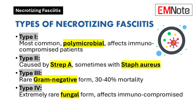Clinicians commonly classify necrotizing fasciitis by the microbial source of the infection. Type 1 is the most common form. It is polymicrobial, involving a mix of gram-positive cocci, gram-negative rods, and anaerobes. This type frequently occurs in the perineal and trunk areas of immunocompromised individuals, particularly those with diabetes or peripheral vascular disease.